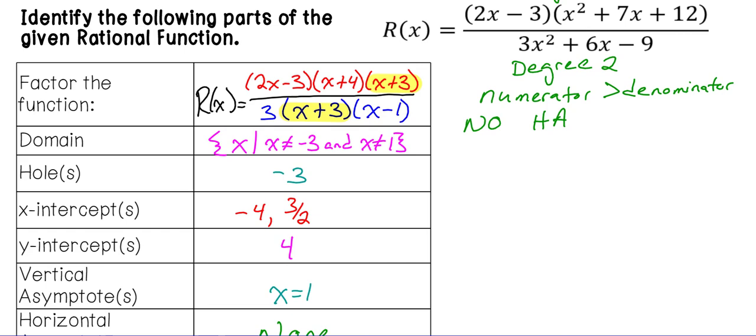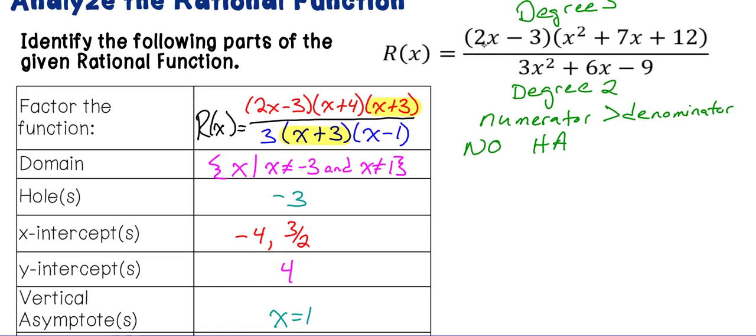Since there isn't a horizontal asymptote, that means there must be an oblique one. And what we need to do is, we need to combine the factors on the r of x at the top. So since there are big factors, I personally like to use the box method of multiplying. I don't know if you guys have ever seen this. So on the side, I have 2x minus 3. See how I put the 2 and the minus 3? On the top, I'm going to put x squared, 7x, and then 12.